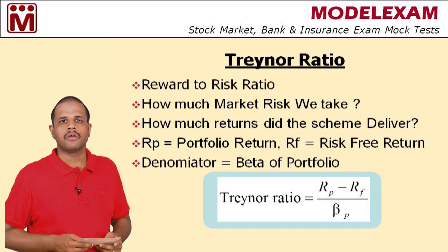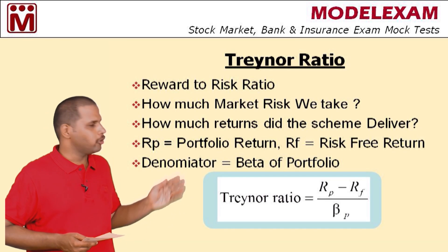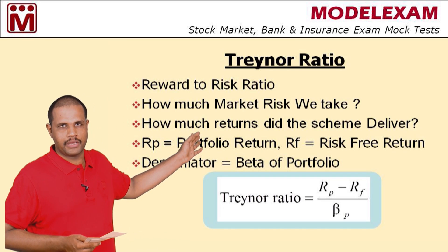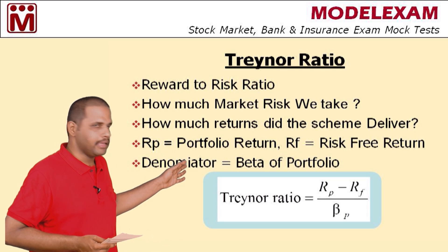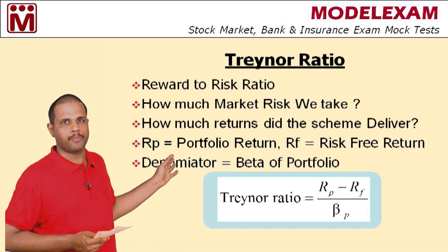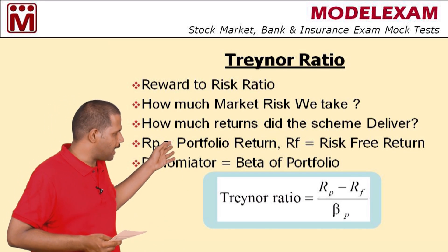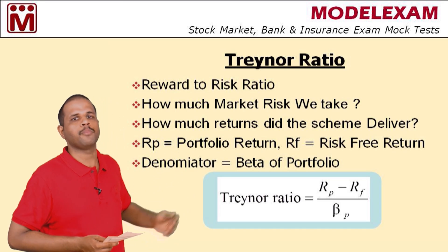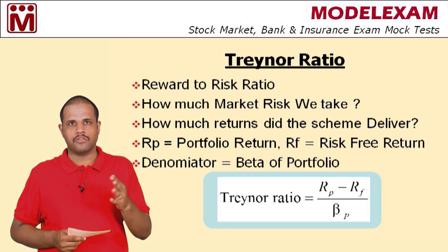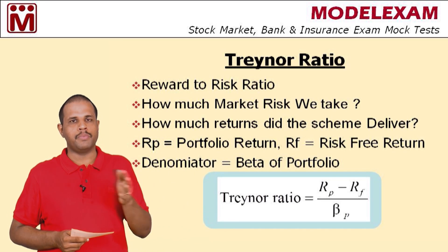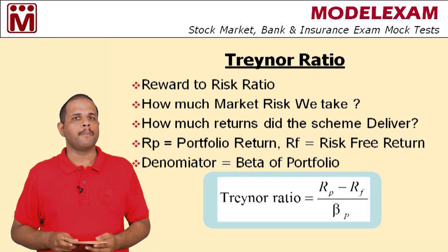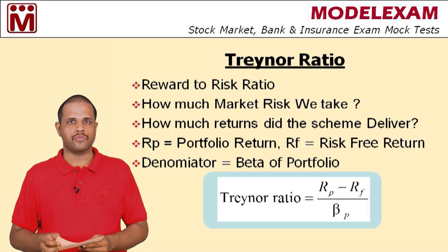Rp is portfolio return, Rf is risk free return, and beta is the market risk of the portfolio. Beta denotes the market risk of the portfolio. Standard deviation is used in the Sharpe ratio, whereas beta is used in the Treynor ratio. That is the main difference between these two ratios.